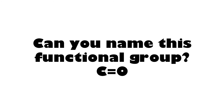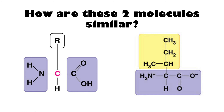Back to functional groups. Do you remember what the C double-bonded to an O is? This is the carbonyl group. How are these two molecules similar? Look at the H2N or H3N — these are the amino groups. The left one has an amino group and the right one has an amino group. And look at the carboxyl group, COOH — the left one has a carboxyl group and the right one has a carboxyl group. The molecule on the right is just missing the hydrogen, but it's still considered the carboxyl functional group.